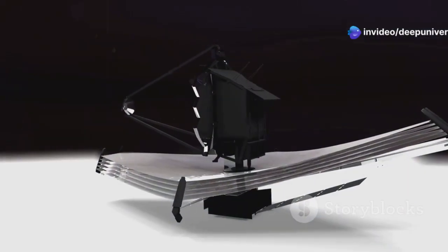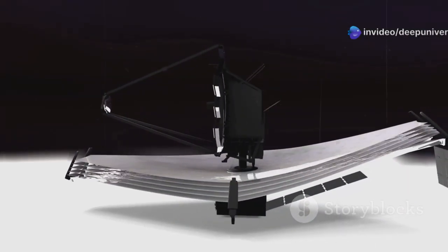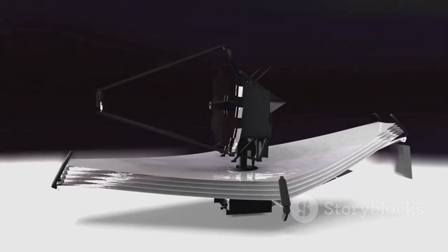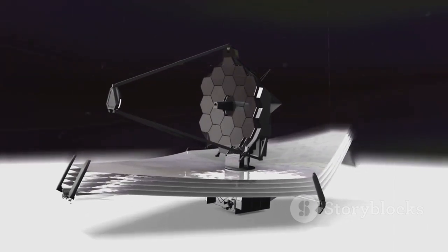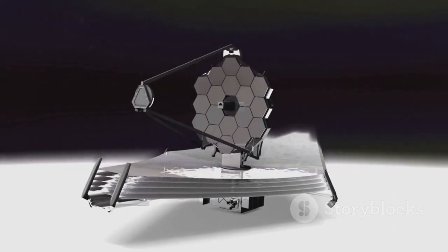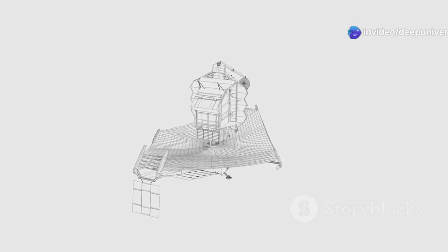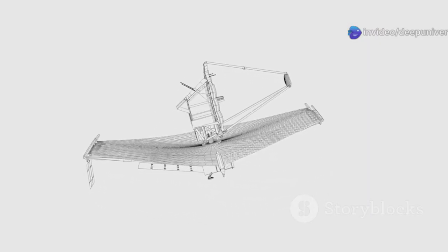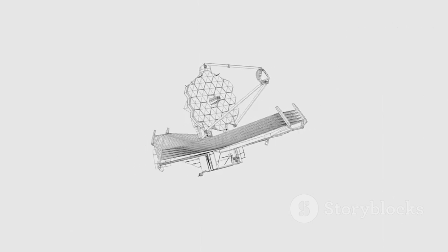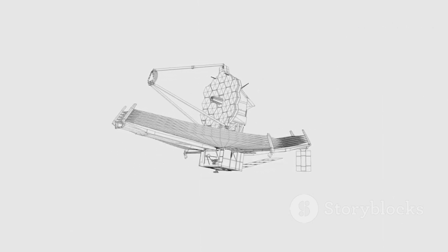The telescope is equipped with a suite of advanced instruments that allow it to observe the universe in unprecedented detail. These instruments are designed to capture a wide range of wavelengths, providing a comprehensive view of the cosmos. The successful deployment and operation of JWST is a major milestone in the history of space exploration. It marks the beginning of a new era in our quest to understand the universe.